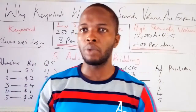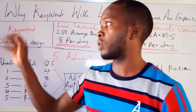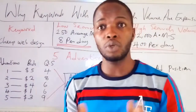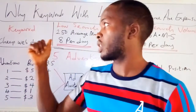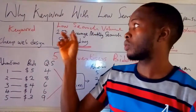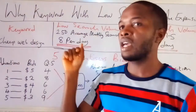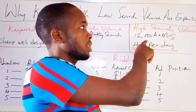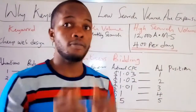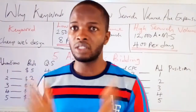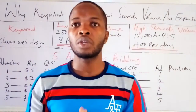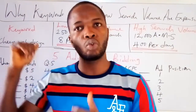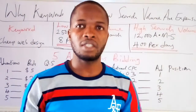I'm going to go straight and explain this with some data I have on my board. The keyword I'm going to use for this particular video is 'cheap web design.' I have two search volumes — this is hypothetical data. Low search volume is about 250 average monthly searches, which is about 8 searches per day, and high search volume is about 12,000 average monthly searches, which is about 400 searches per day. Same keyword, two different search volumes.